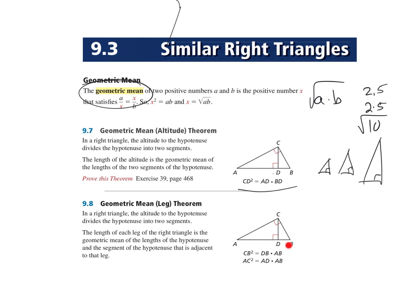In the top formula we had DB times AB. So both of those — notice — are the exact same segments. AB is the large one in the top formula, and AB is the long one in the bottom formula. So it all depends on which one you're looking for. Notice that DB and AD depend on which altitude you're using. So if we're looking for CB, we use the little segment. If we're looking for AC, we use the larger segment of the two.